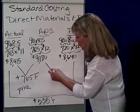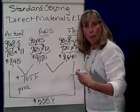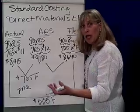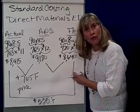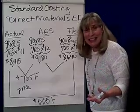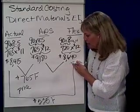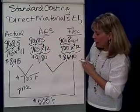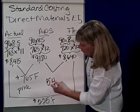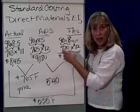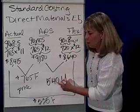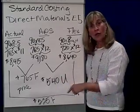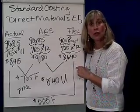Sometimes when we have a favorable price variance, that means we bought cheaper materials, which may in turn create a lot of waste or scrap — because it's inferior. Did that happen in this case? The difference between the actual quantity at standard cost and the flexible budget is $540. Since the actual standard is greater than the flexible budget, notice it's unfavorable. If you net these two, notice it comes back to the overall $225 favorable. So here are the mechanics of finding the direct material variances.